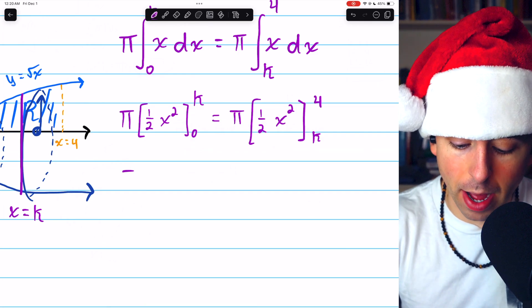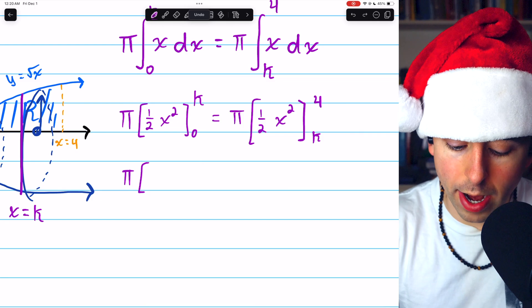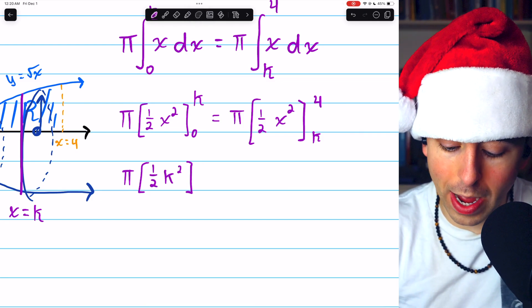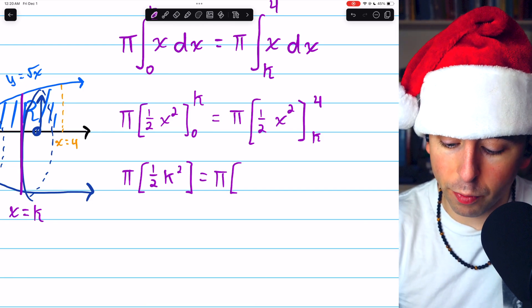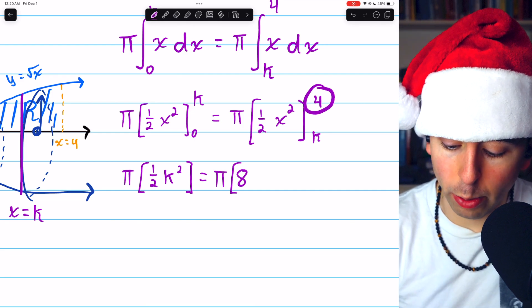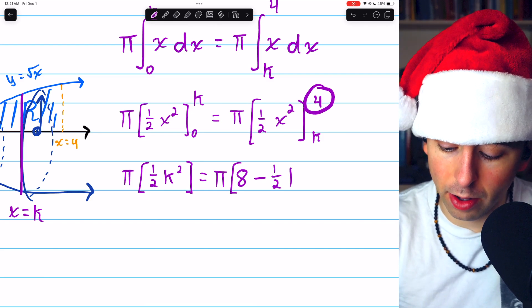On the right, we now have pi multiplied by, plug in the upper limit, so 1 half K squared, and then plugging in 0 won't do anything. On the right, we have pi multiplied by, plugging 4 in will give us 8, and then plugging in K for our lower bound, that's going to be minus 1 half K squared.